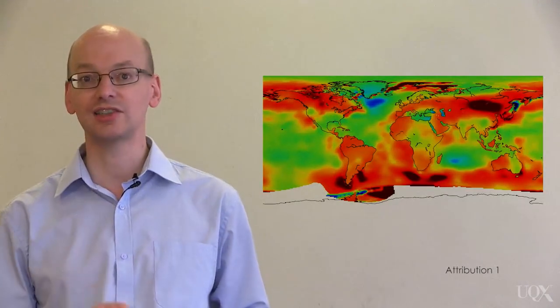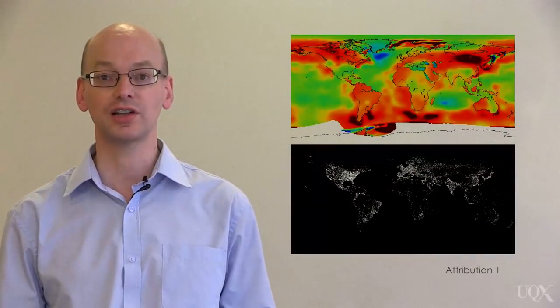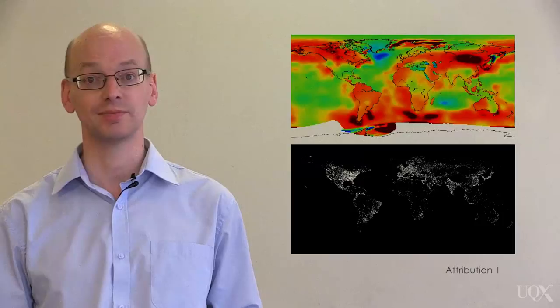We can also get a good estimate of human development from satellite images of the Earth at night, showing light pollution from our cities. Let's compare that to the warming map.